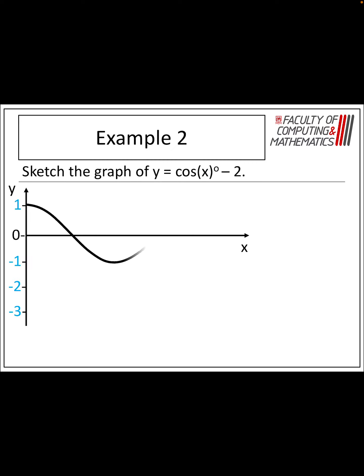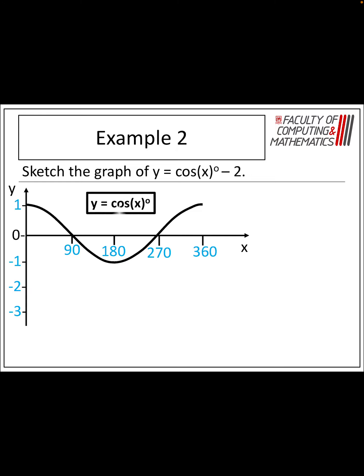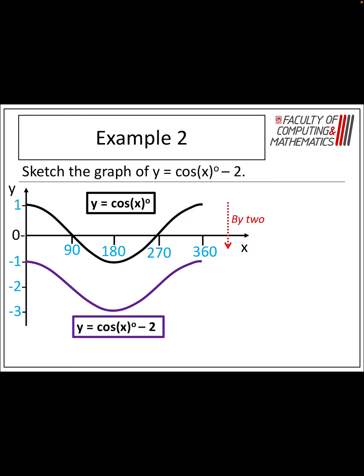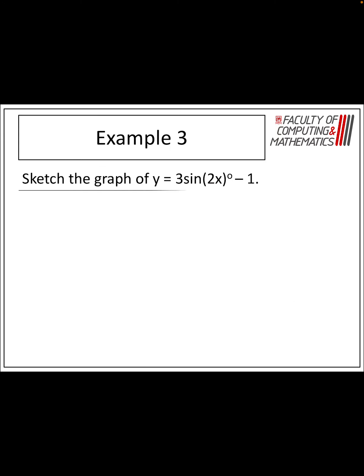For cos minus 2, I would like candidates to draw in cos x, and then take the whole graph and shift it down by 2, which affects the maximum and minimum values. The maximum value is 1 at 0 and 360, the minimum is at minus 3 at 180. We've still got an amplitude of 1 and a period of 360.